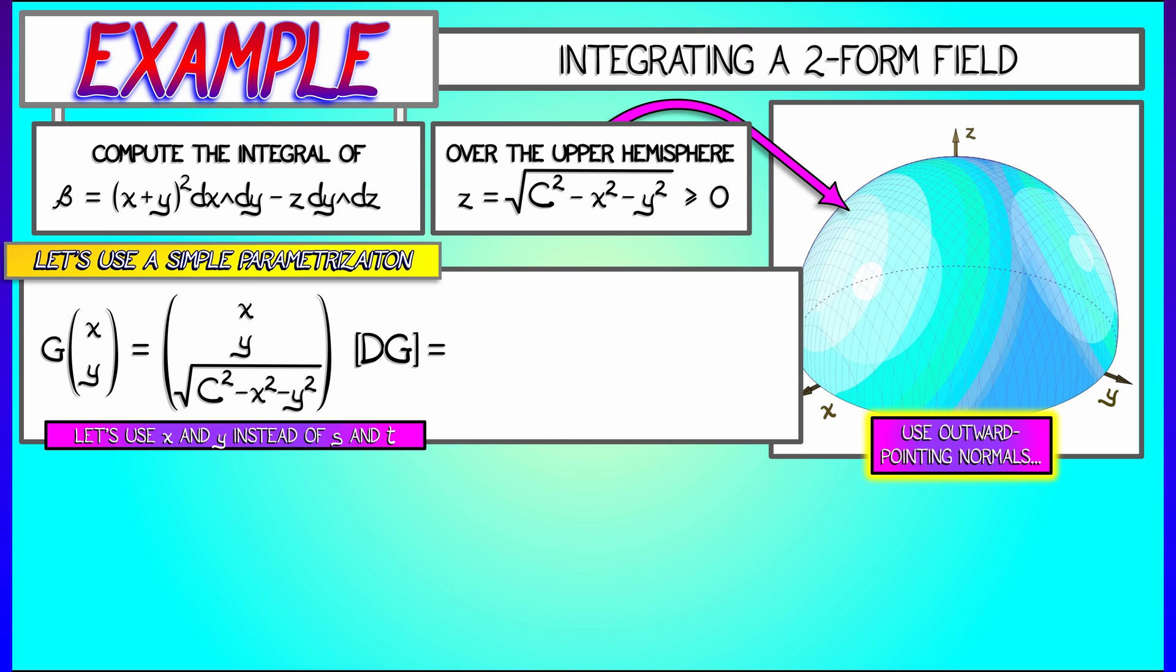The derivative dg is given by what? I take for the first column the partials with respect to x. That's 1, 0, and minus x over root c squared minus x squared minus y squared. Then for the partials with respect to y, I get 0, 1, and minus y over root c squared minus x squared minus y squared.